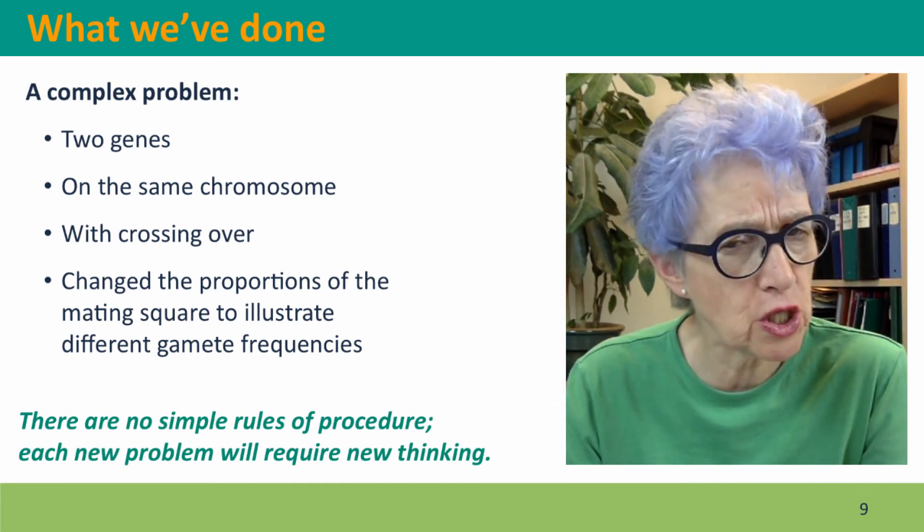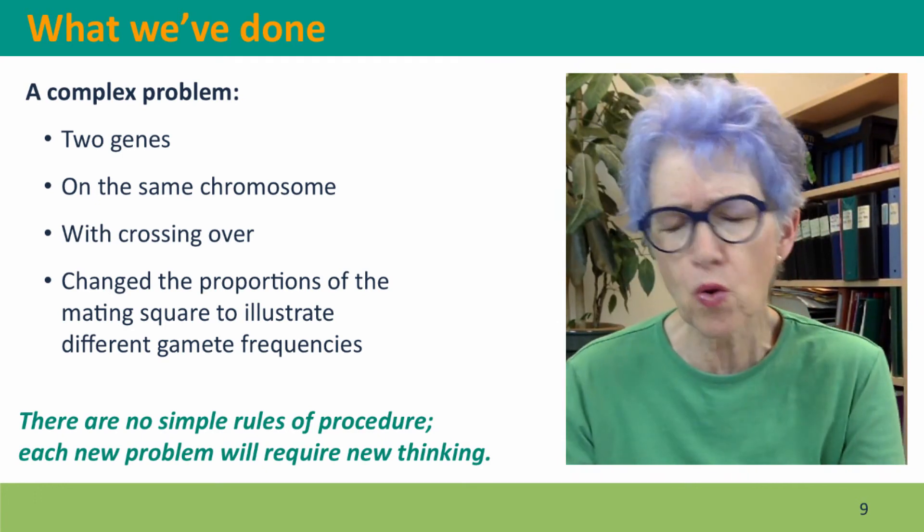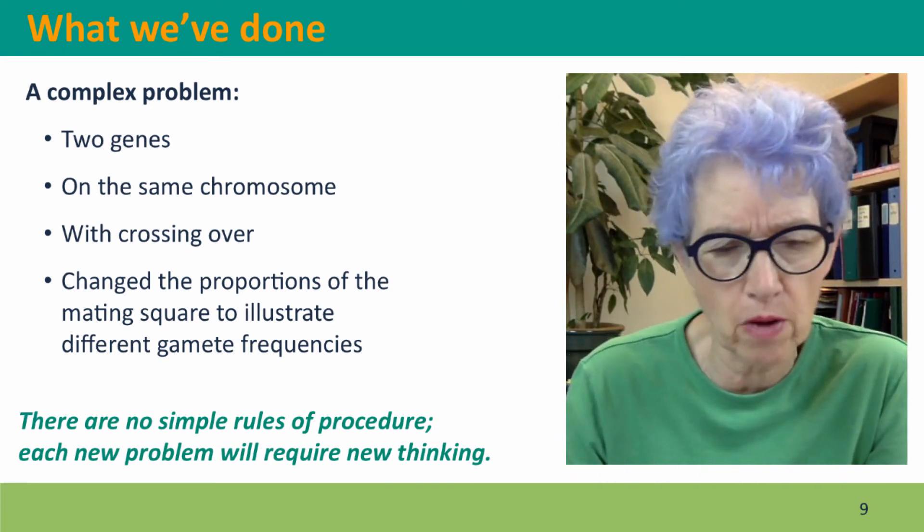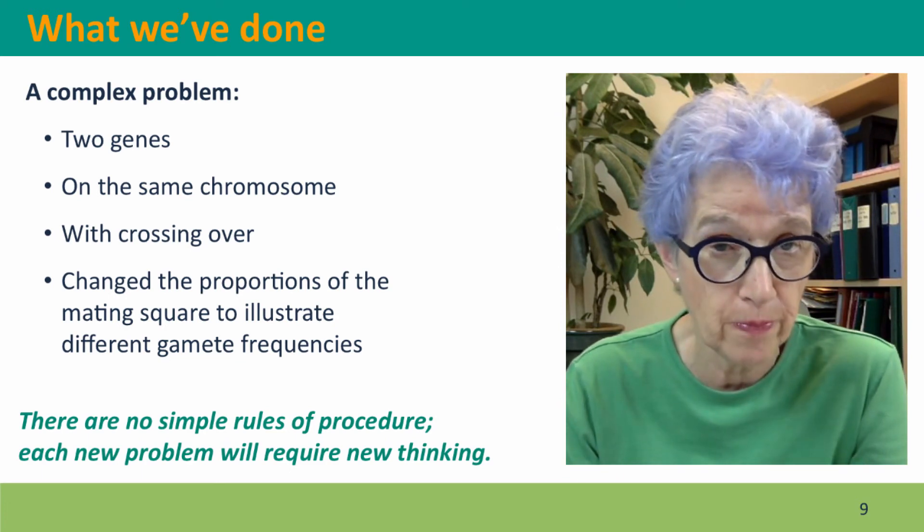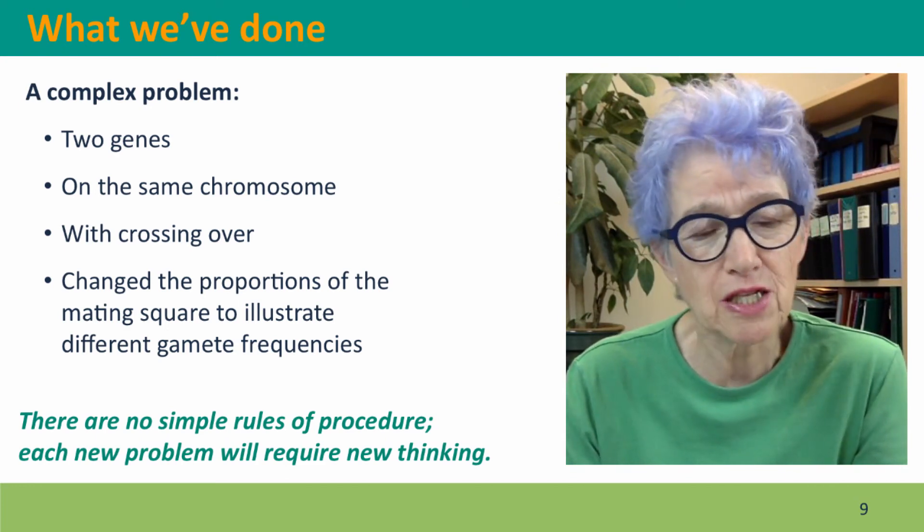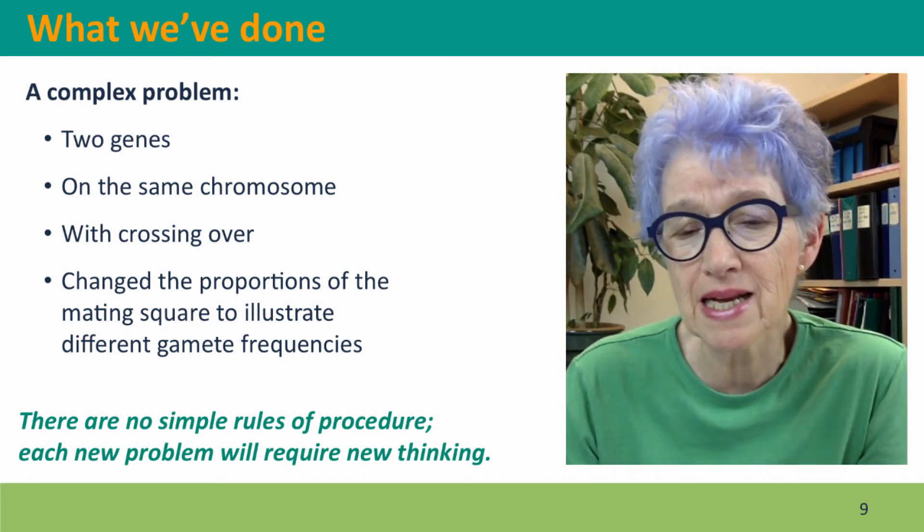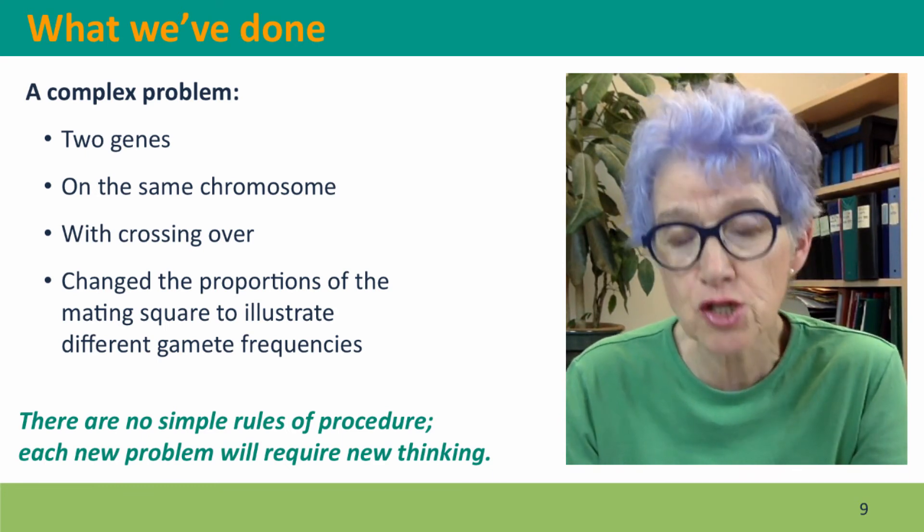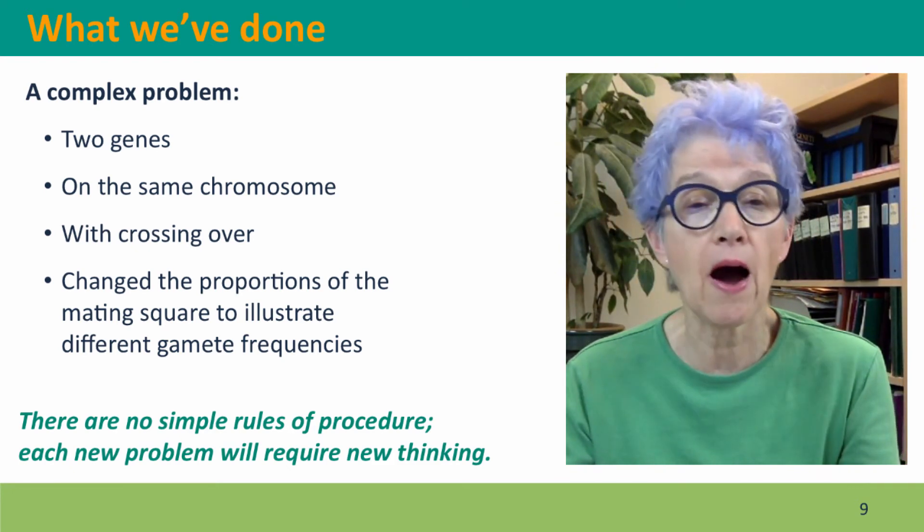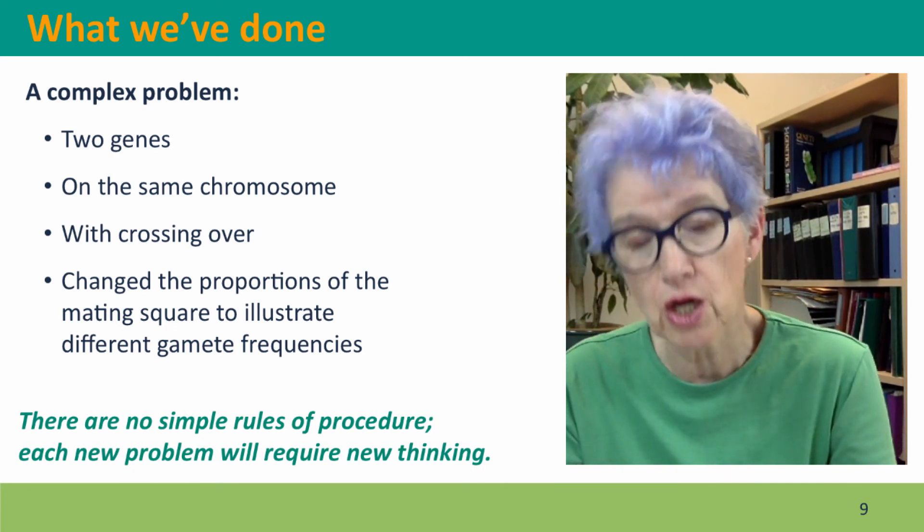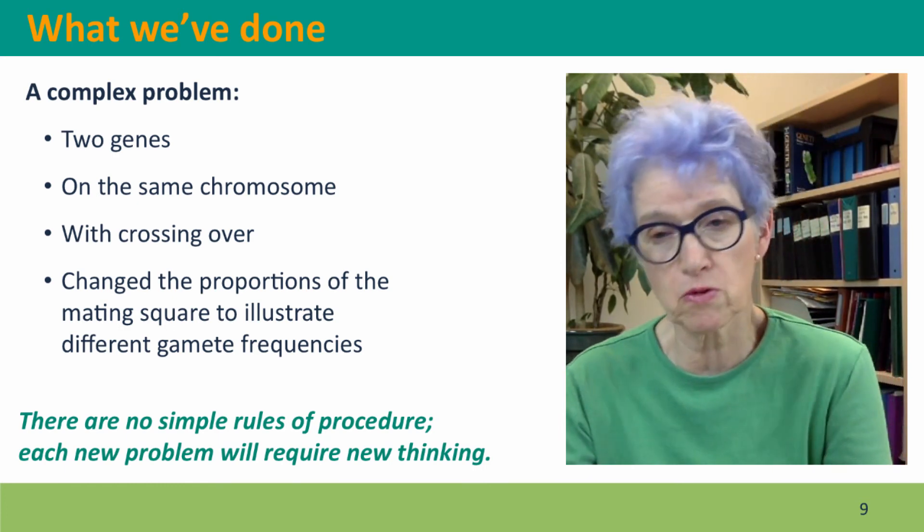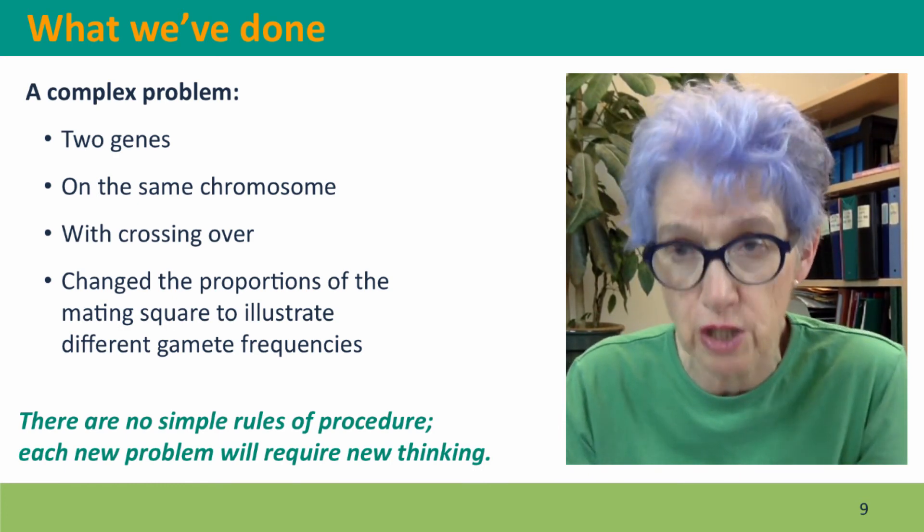The important message I want to leave you with is you might think, okay, I've been shown how to do this problem. I'll just memorize this pattern, and then when I see another problem just like this, I'll be able to solve it too. Well, as you'll learn, genetics problems don't really work that way. There's no simple rules of procedure. You're going to get different kinds of problems all the time. Each new problem is going to require you to think back to the fundamentals of how meiosis works, how mating works, to predict the outcome. That's much more challenging than simply memorizing some simple rules of procedure.